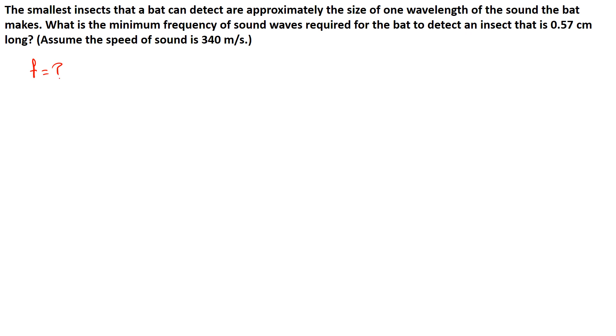Of sound waves required for the bat to detect an insect that is 0.57 centimeters. We have 0.57 centimeters, that's the size of the insect. But if we go back to the first line, they said that the smallest insect that can be detected is approximately the size of one wavelength, so this is equivalent to the wavelength. We convert it to meters: it becomes 0.57 times 10 to the power of negative 2 meters.